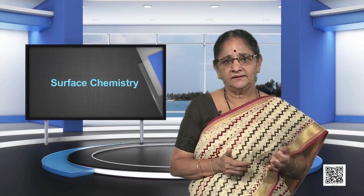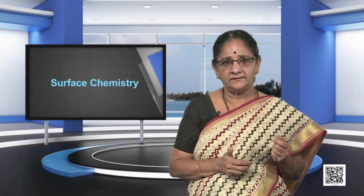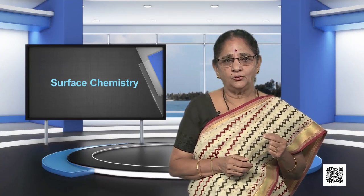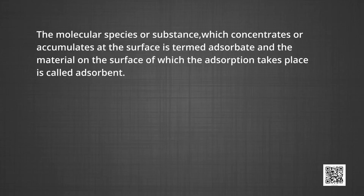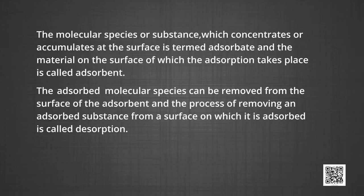Adsorption is essentially a surface phenomenon. The surface of a solid has the tendency to attract and retain the molecules with which it comes into contact. These molecules remain only at the surface and do not go deeper into the bulk. The accumulation of molecular species at the surface, rather than in the bulk of a solid or liquid, is termed adsorption. The molecular species which concentrates at the surface is termed adsorbate, and the material on whose surface adsorption takes place is called adsorbent. The process of removing an adsorbed substance from a surface is called desorption.